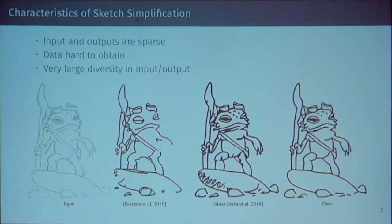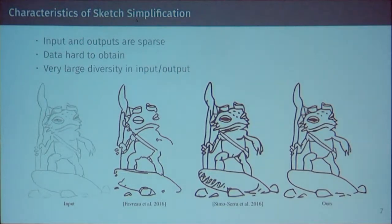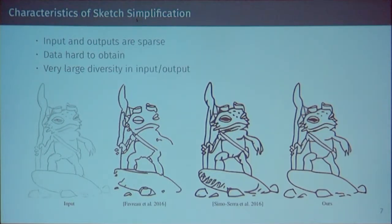There are quite a few key characteristics here. In contrast with normal natural images, the inputs and outputs are sparse. Another problem is that the data is extremely hard to obtain. Furthermore, there is a very large diversity in input and output — drawing styles have evolved a lot, and lots of people have different drawing styles — so when you evaluate this, it becomes a problem of generalization.